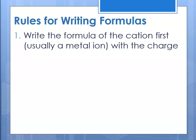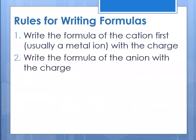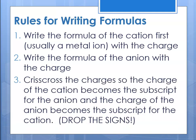Remember, charges are shown as superscripts. Then write the formula of the anion with its charge, also as a superscript. Then crisscross the charges so that the magnitude of the charge on the cation becomes the subscript for the anion.